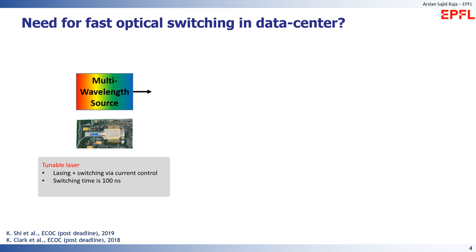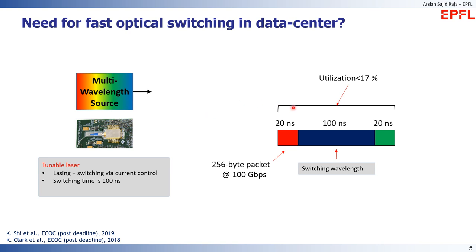One of the most important elements required by an optical circuit switch data center is a multi-wavelength source — a source that can emit many colors of light. A simple solution is to use an off-the-shelf tunable laser, but it has been demonstrated that this laser cannot switch between different colors faster than 100 nanoseconds. Since more than 95% of workload inside the data center involves small packets of 29 nanoseconds, switching less than 1 nanosecond is required for efficient resource utilization.